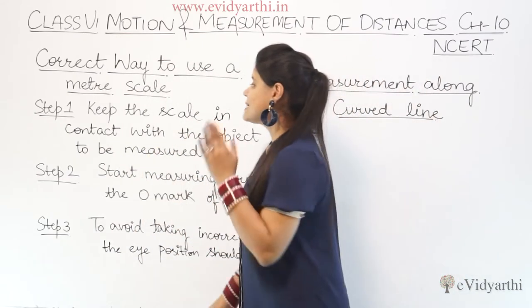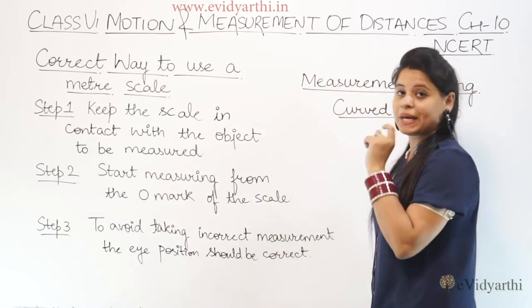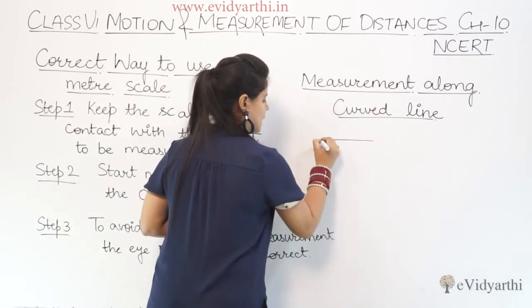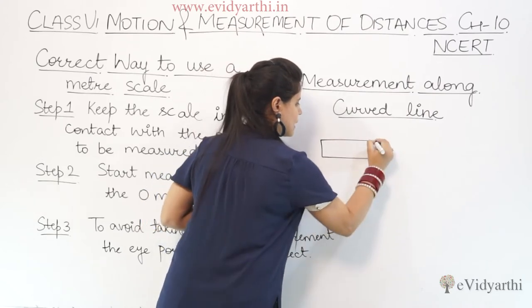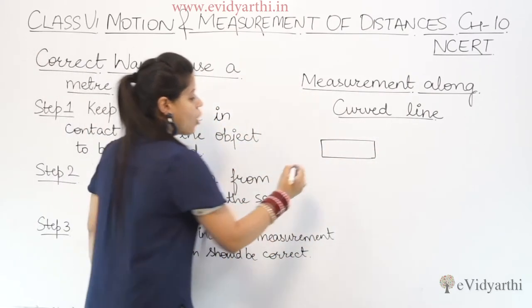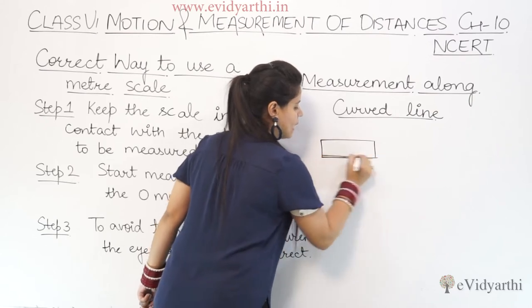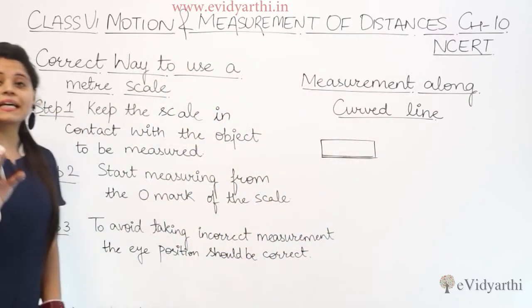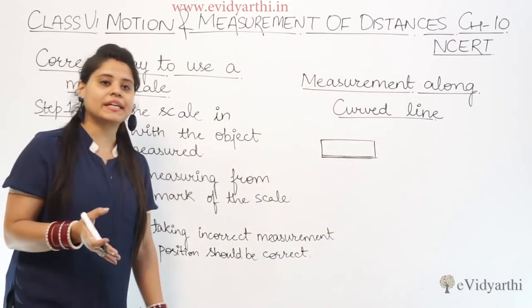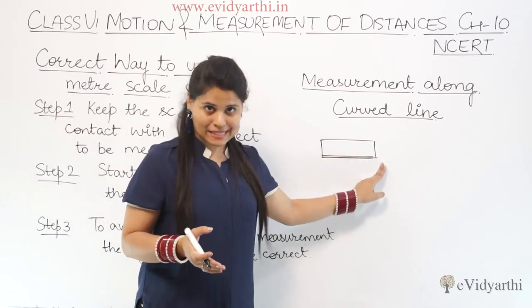Step 1 is to keep the scale in contact with the object to be measured. For example, if you have an object — let's suppose it is a box — and you have to measure a part of it, you place the ruler against it.